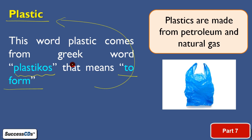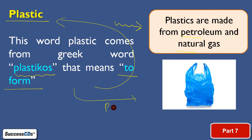We are going to study in detail what forms plastic can actually take. Plastics are made up of petroleum and natural gas. As you can see in the figure, a polythene bag is shown — polythene is again made up of plastic, and it is commonly used to carry things.